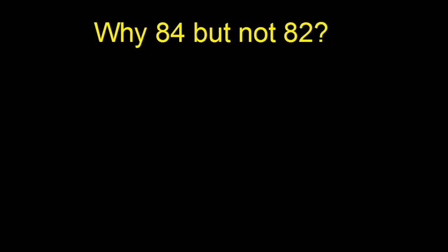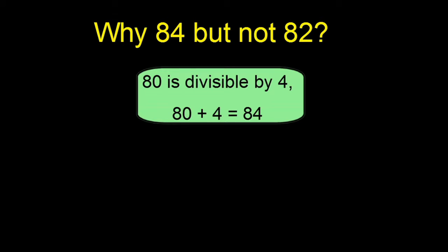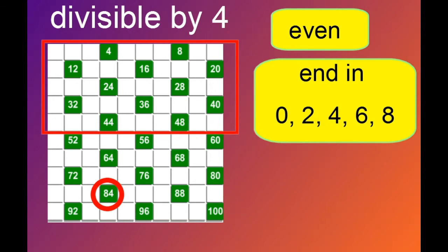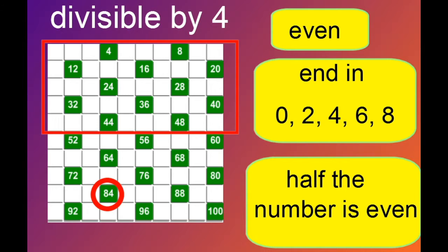Well, there's a quick way of finding out. We can say that 80 is divisible by 4, so the next number will be 84. We can also say that half of 84 is 42, but half of 82 is 41. Now, 42 is even, 41 is odd. And 84 is therefore divisible by 4. So that's our rule: the numbers must be even, ending in 0, 2, 4, 6, and 8, but also half of the number must be even.